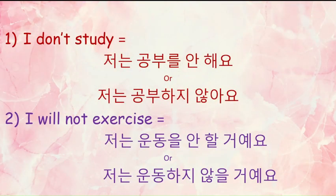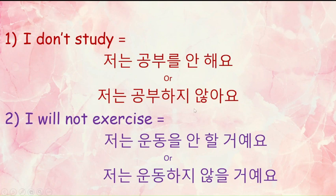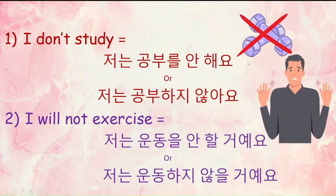Now let us look at examples to understand it more clearly. First one is: I don't study. There are two ways — one using 'an' and the other using 'ji antha'. So in Korean it is 'chanan khumbur anhaeo' or 'chanan khumbuhaji anhaeo'. Just notice the difference between these two sentences — the meaning is the same but the formation is different. Next example is: I will not exercise. There are again two ways: 'chanan undungul anhaeo' or 'chanan undunghaaji anhaeo'. In the first one 'anhaeo' is used, and in the second one 'ji antha' is used.